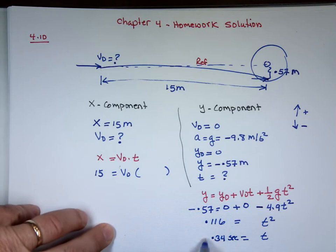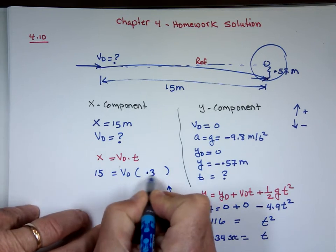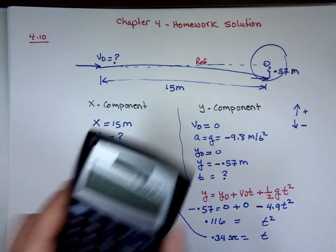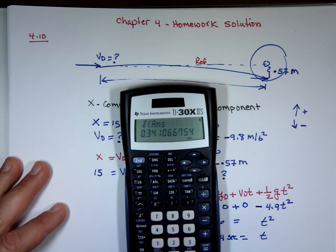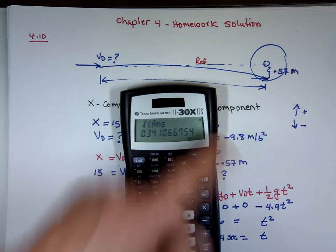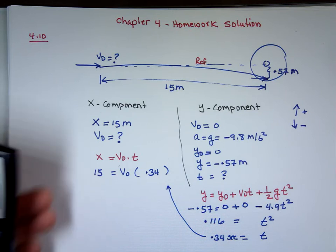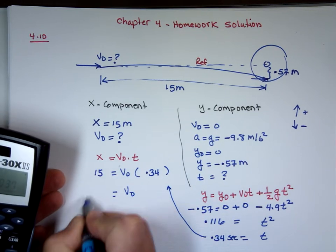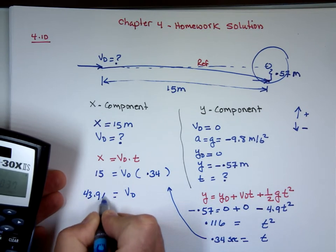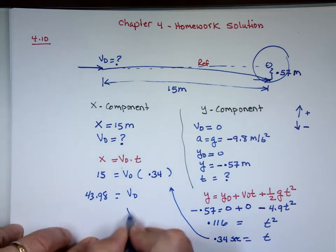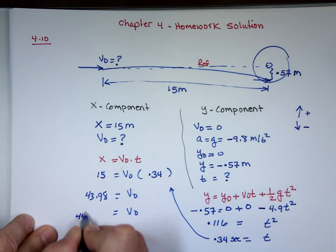Now I can plug t back into the x equation. I'm carrying all the digits on the calculator, so I'll use t = 0.3401... to avoid rounding error. 15 divided by that number gives an initial velocity of approximately 43.98, which rounds to 44 meters per second using two significant digits.